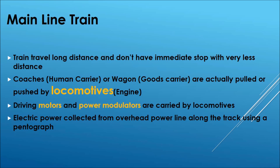The driving motor and all power modulators are mounted on the locomotive. An instrument called the pantograph is used to collect electrical power from the overhead transmission line and deliver it to the power modulator. As for the coaches, the wheels below them are connected to a generator — as the train moves, the wheels rotate and the generator produces electrical energy for lighting and fans.